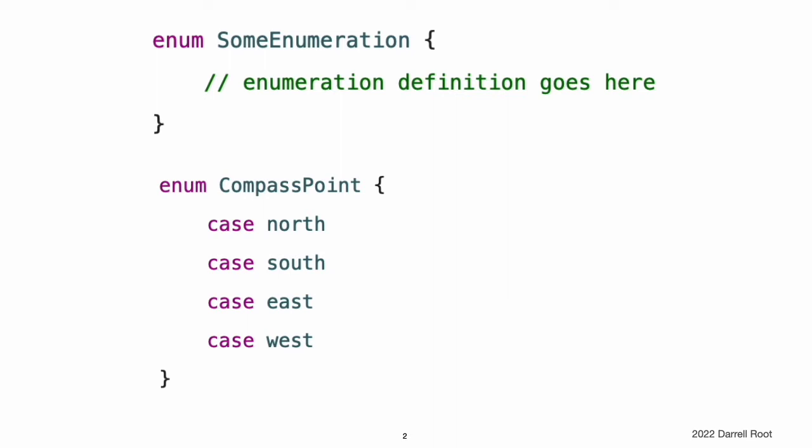Enumerations in Swift are much more flexible and don't have to provide a value for each case of the enumeration. If a value, known as a raw value, is provided for each enumeration case, the value can be a string, a character, or a value of any integer or floating point type.